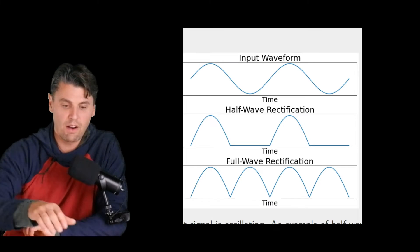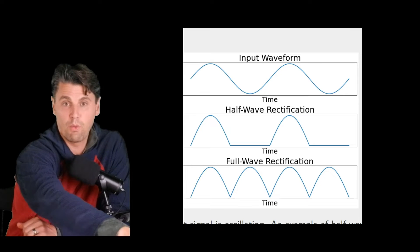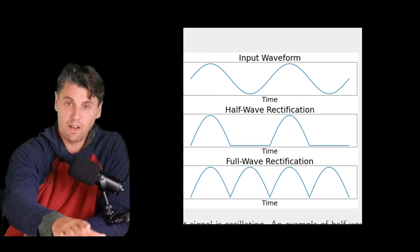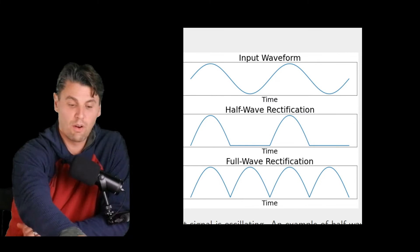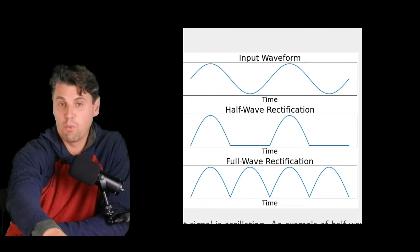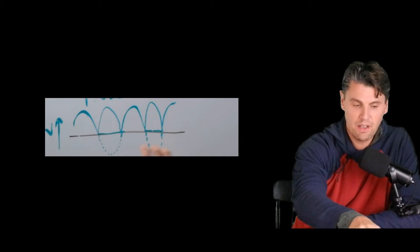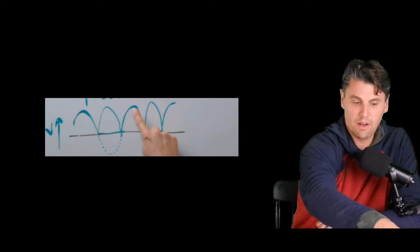When we define heat units later on, this is actually going to come into play again because this type of full wave rectification was done in the early days of x-ray. So a lot of the units actually are related to this type of full wave rectification. You can see that even with this full wave rectification, there's a lot of up and down in our signal here.